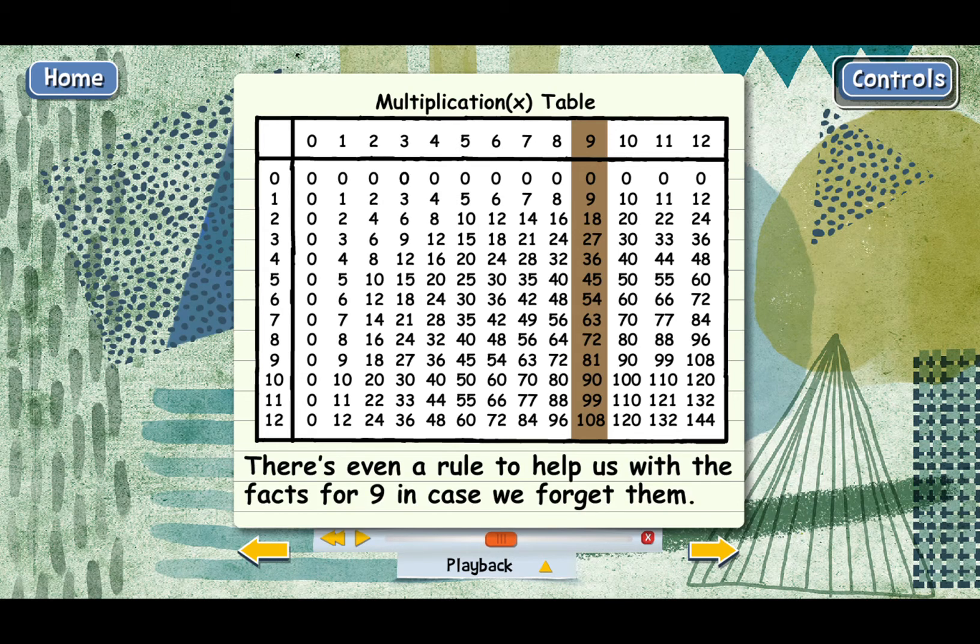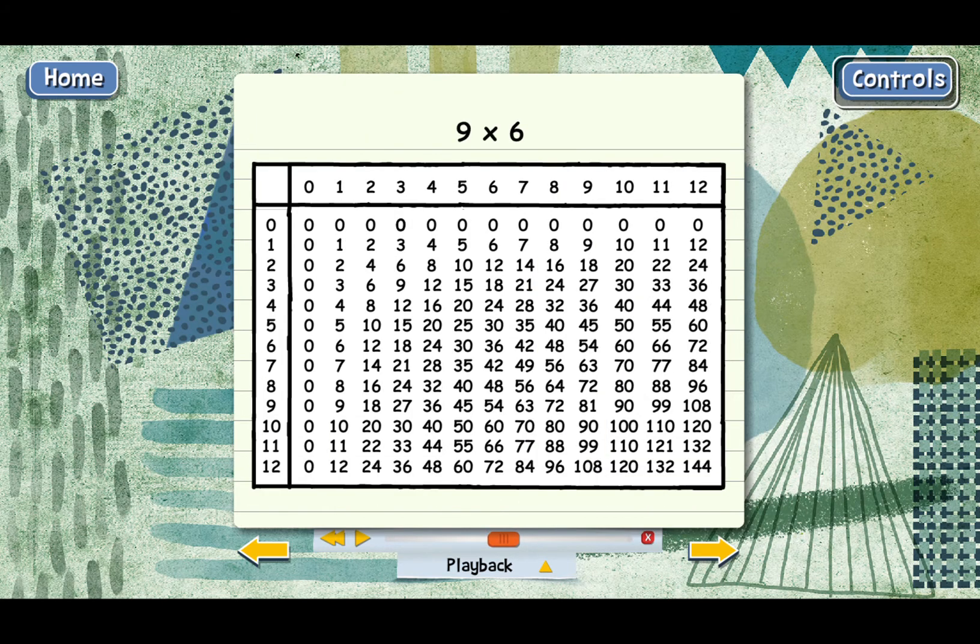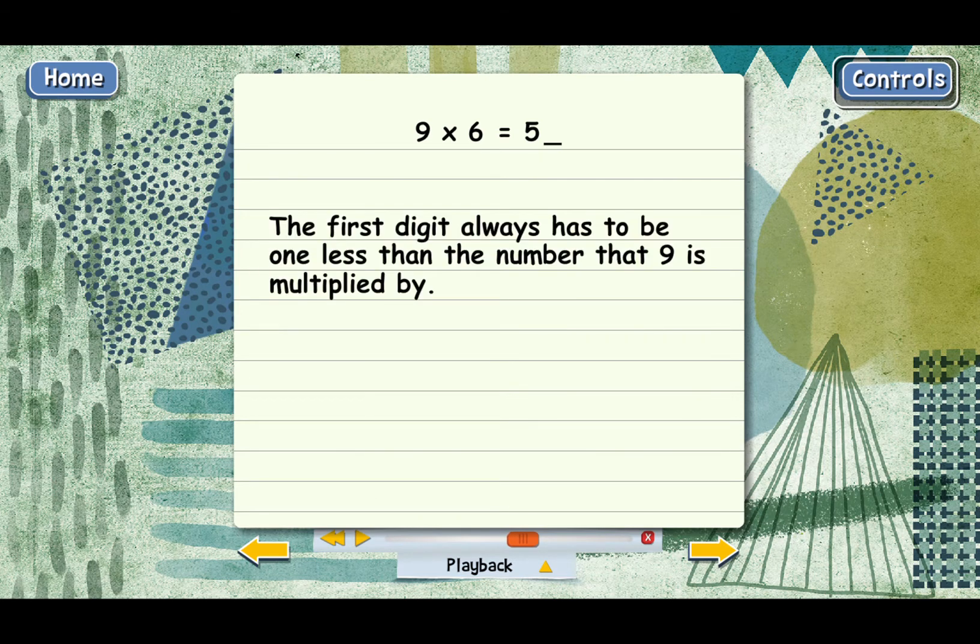Here's how it works. Let's say you want to multiply 9 times 6 and can't remember the answer. The first digit of the answer has to be 5, and you can see on the multiplication table that that's right. It shows the answer is 54. The first digit has to be, always, when you're multiplying by 9, it has to be 1 less than the number that 9 is multiplied by. So with 9 times 6, the first digit of the answer has to be 6 minus 1, or 5. Does that make sense?